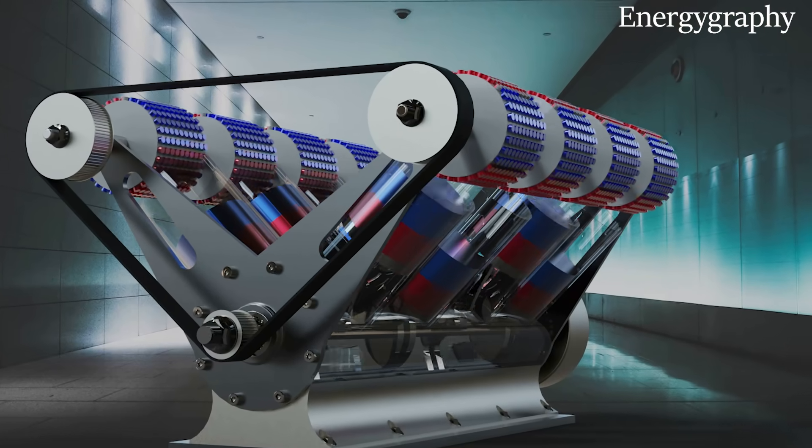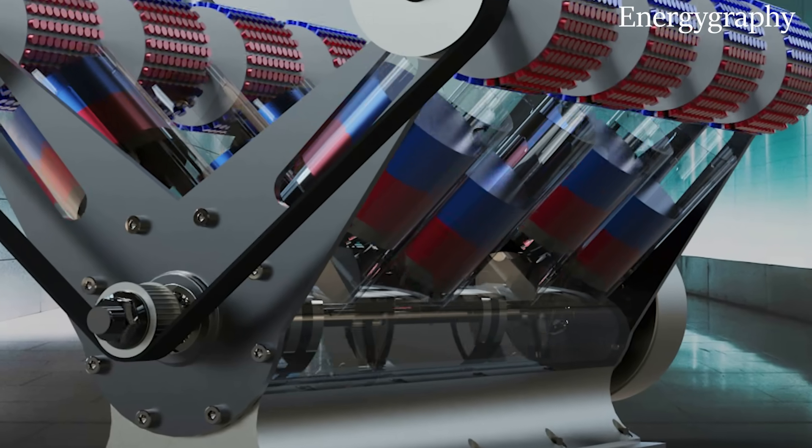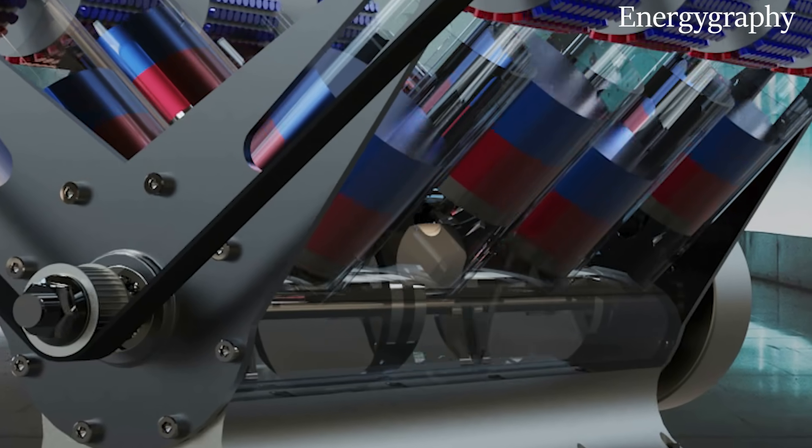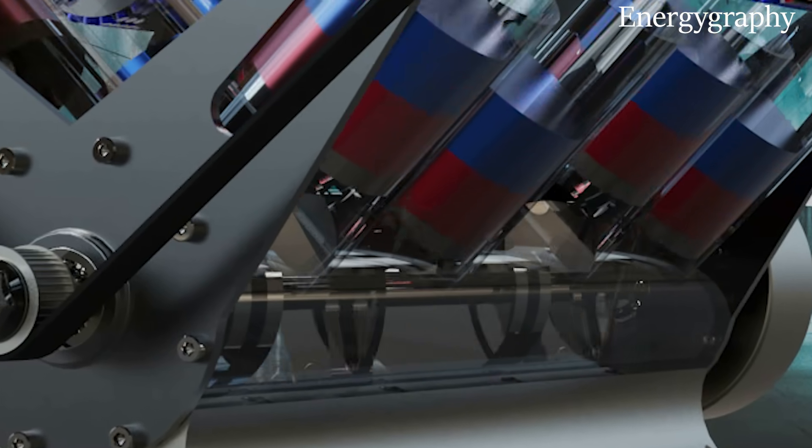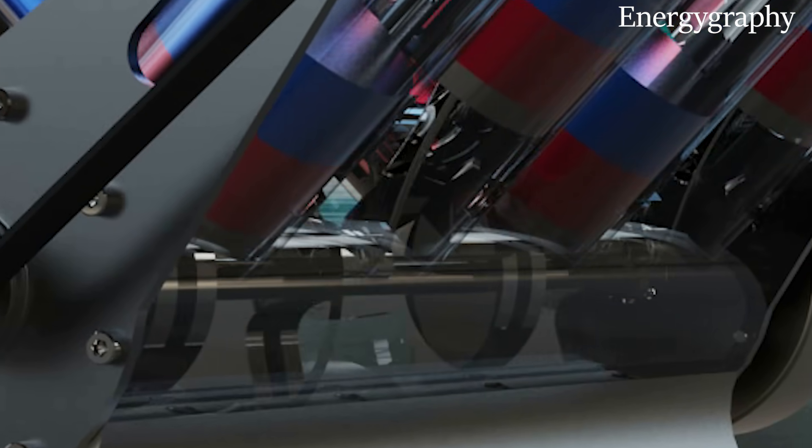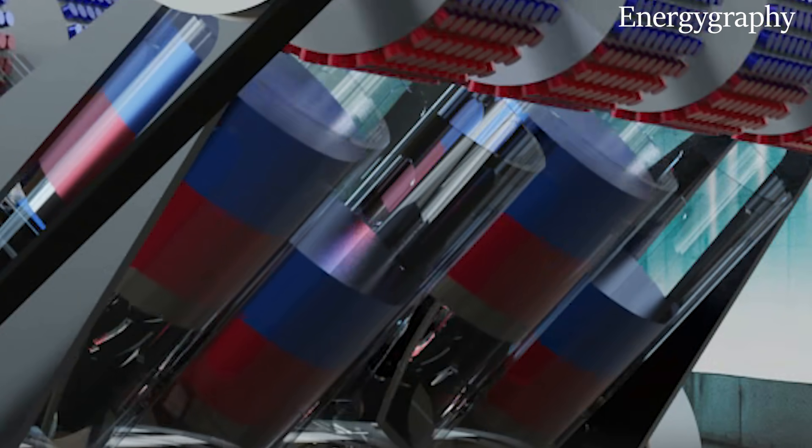The crankshaft is located in the center, and 8 V-shaped magnetic pistons are connected to it by connecting rods and move back and forth in the glass cylinders.